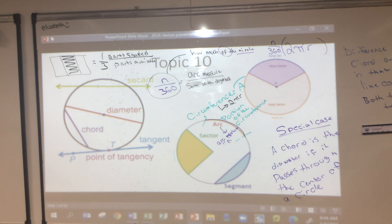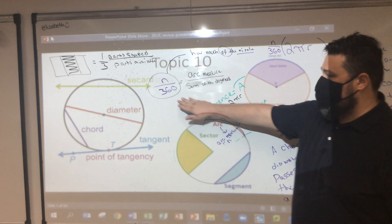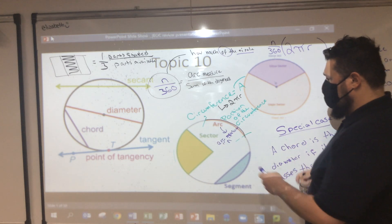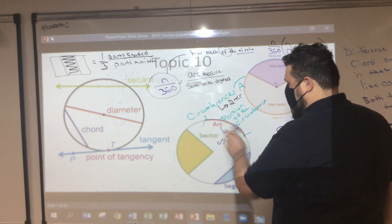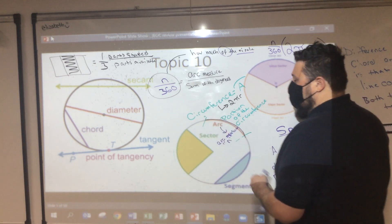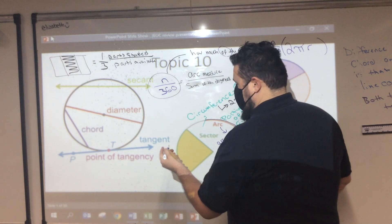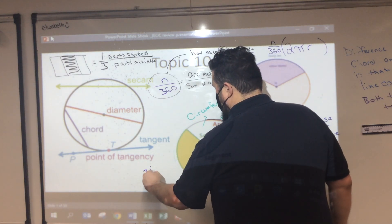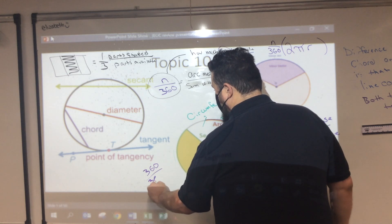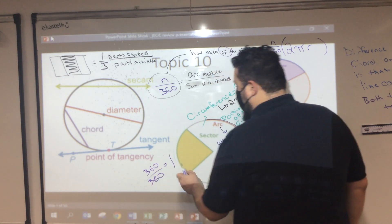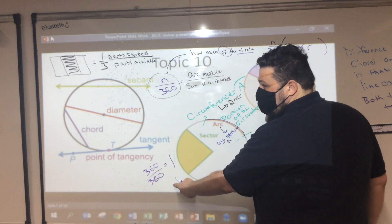Why do we have it over 360? How much is in the entire circle? 360. So if I wanted the whole circle, my fraction would be 360/360, which simplifies to 1 — so we're looking at one whole circle.